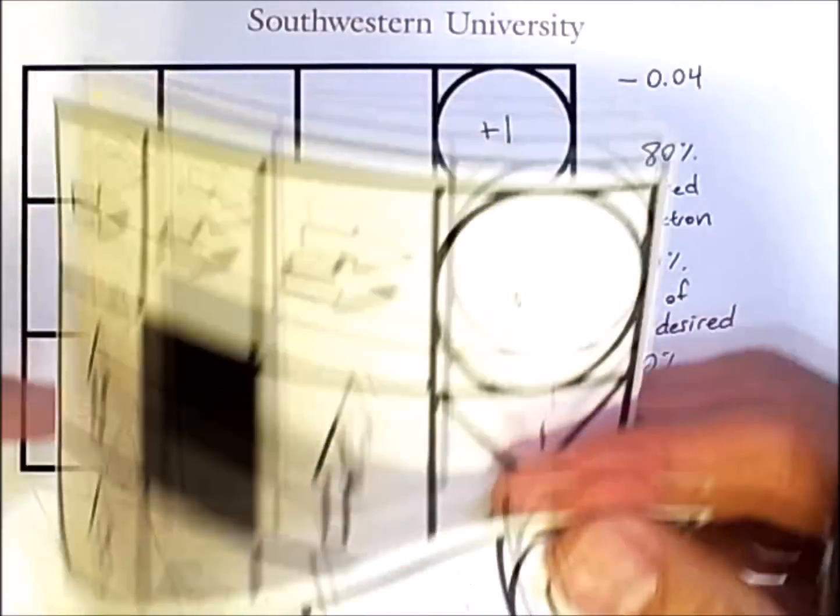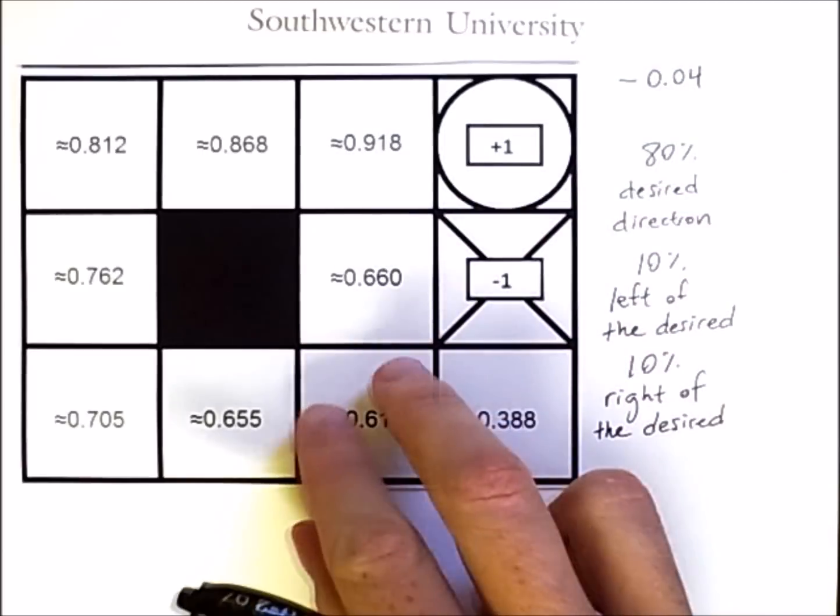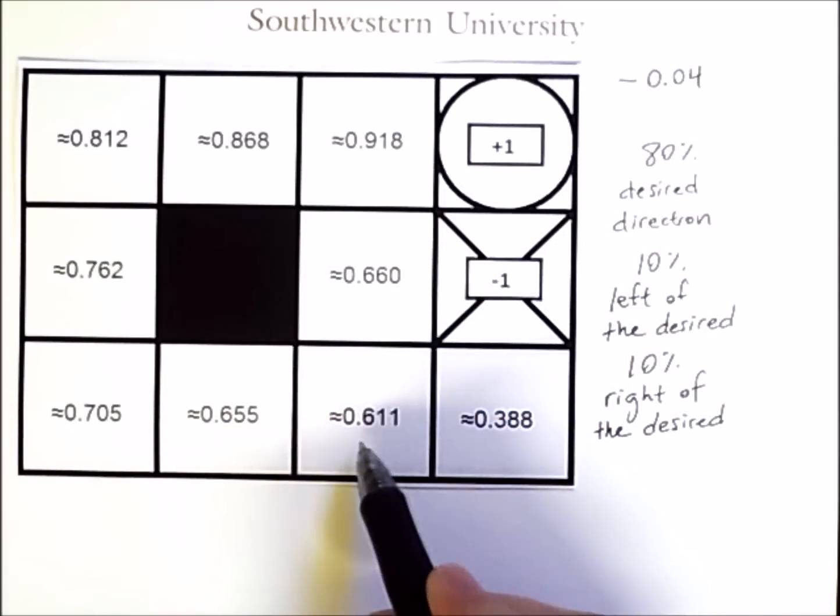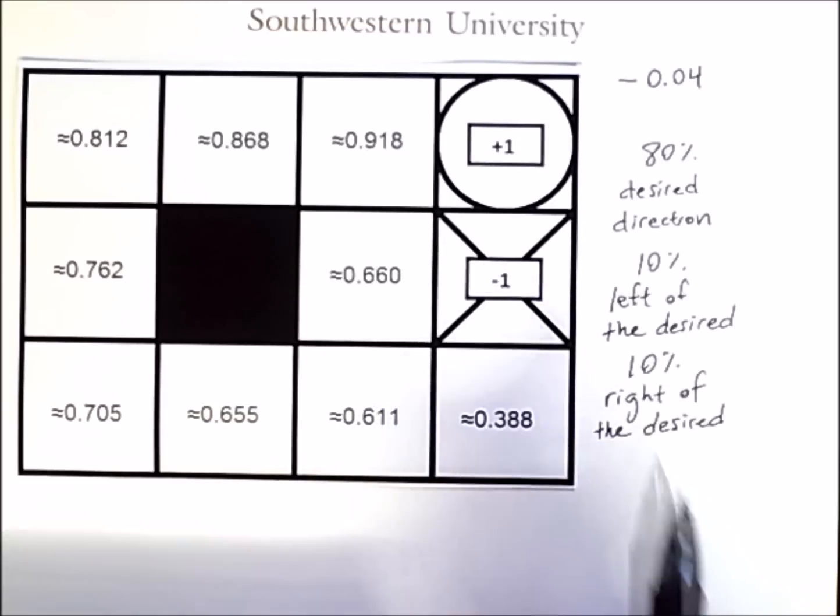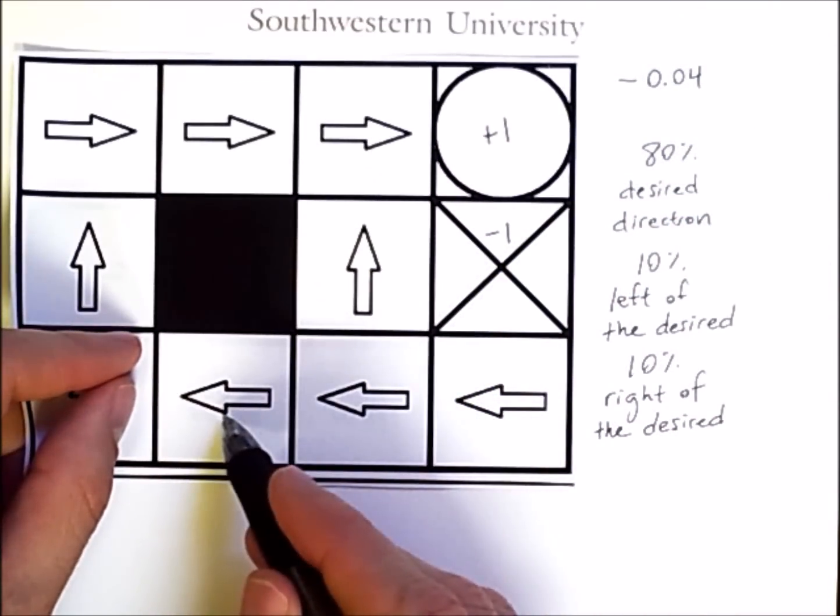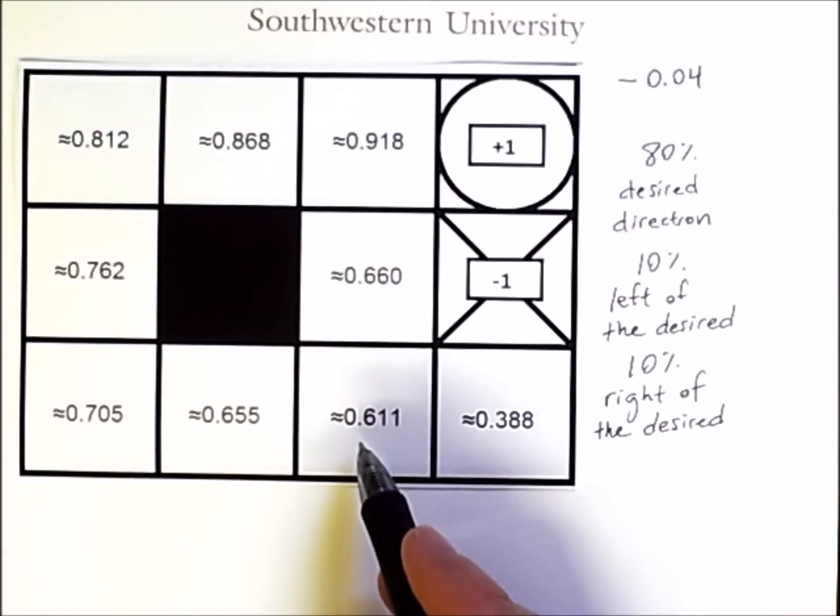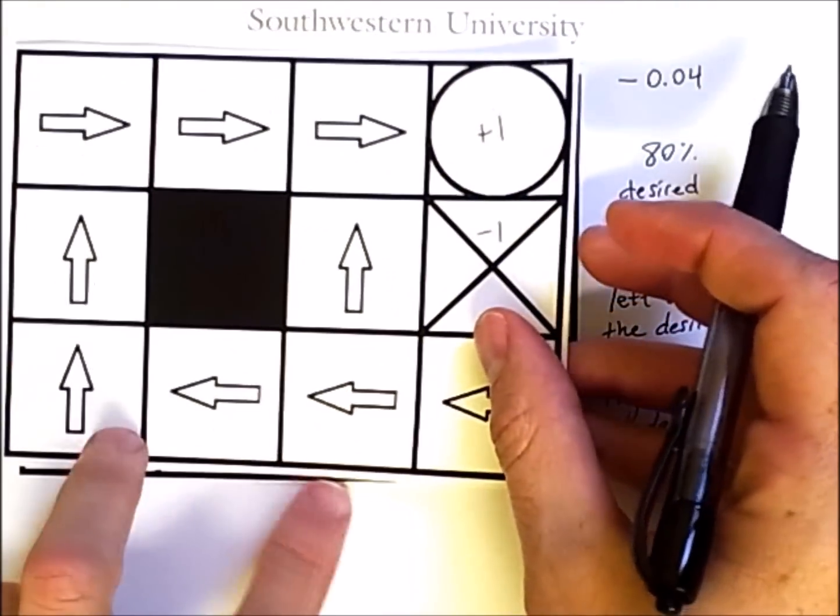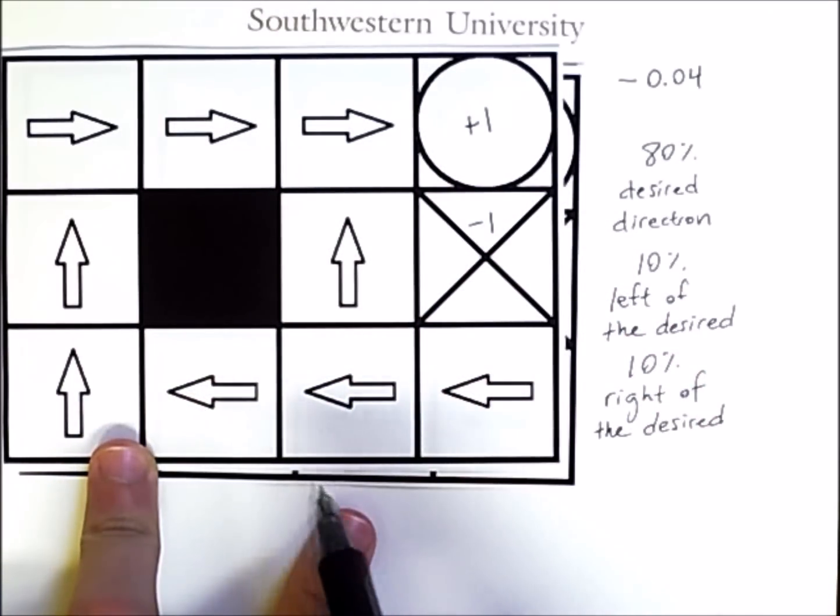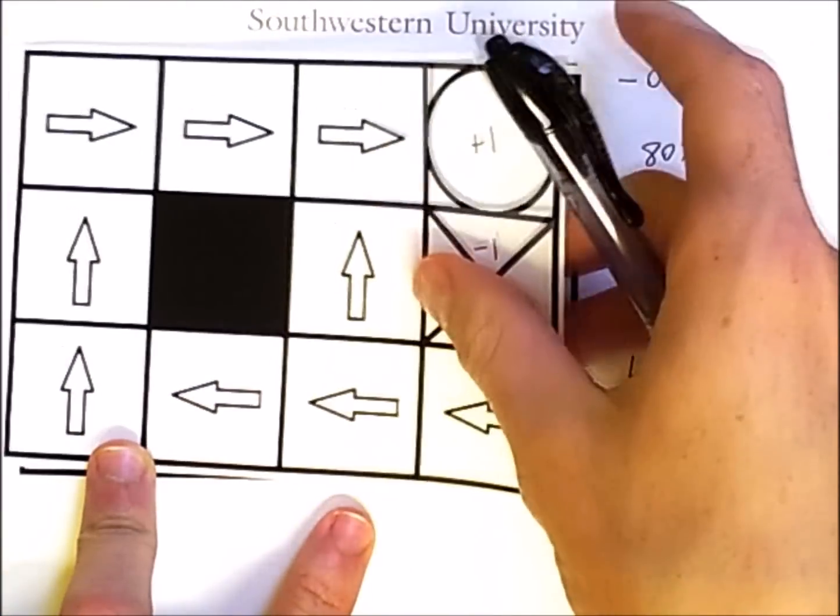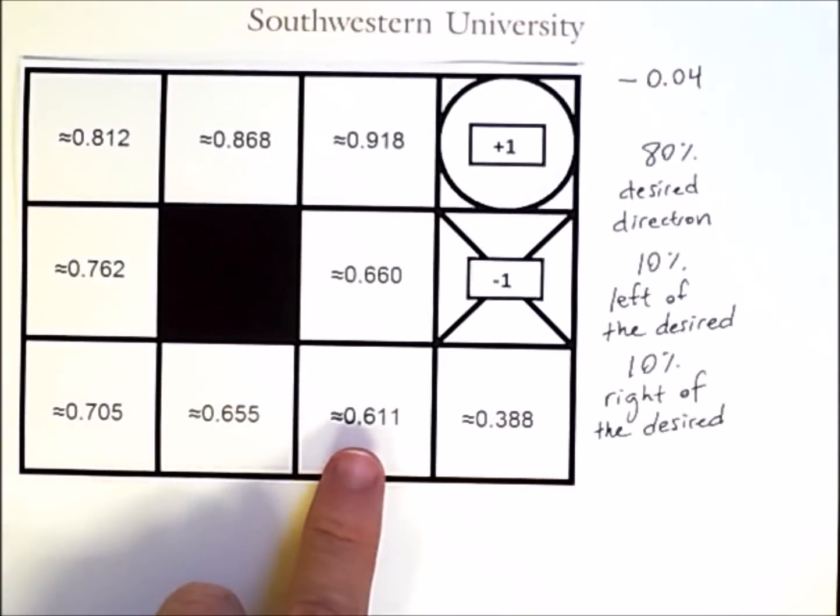In particular, the assumption made from, for example, this state is that the reason the value of this state is 0.611 is that if you move left from that state and then keep taking the designated action in each of these states you encounter, you would expect to, in the end, get a reward of 0.611.